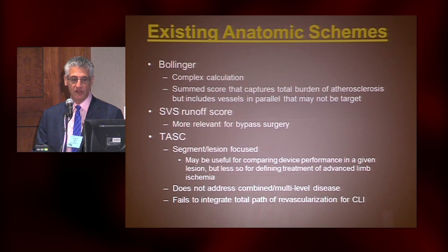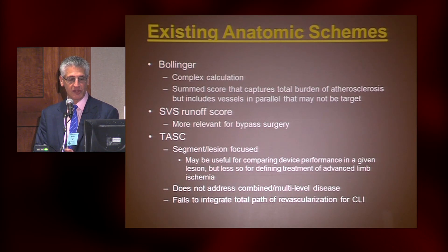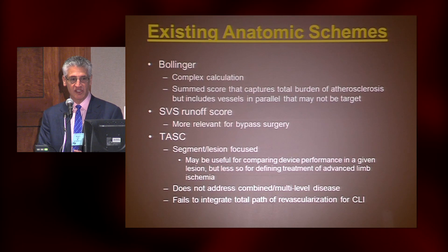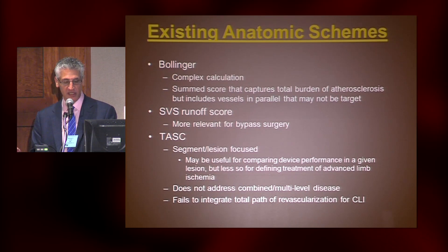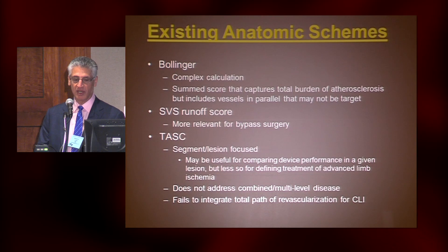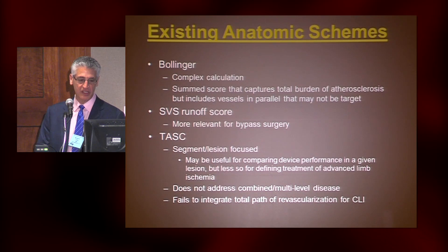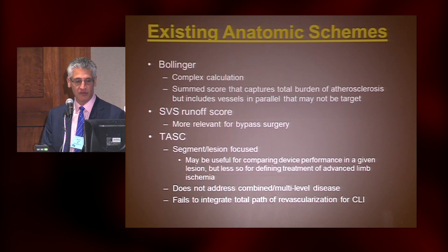There are other runoff scores, like the SVS runoff score. It's been reasonably useful to look at outcomes of bypass surgery, but it's really not been very well used in endovascular intervention. And then we have the TASC system, which has its most use in focusing on outcomes for a specific lesion with a specific device in a specific location — for example, an SFA lesion or a tibial lesion. But it doesn't address what we're treating in CLI, which is combined and multilevel disease. It doesn't integrate the whole path of revascularization. So for critical limb ischemia — which, in contrast to claudication, is usually not a single segment disease — it really has limited utility.